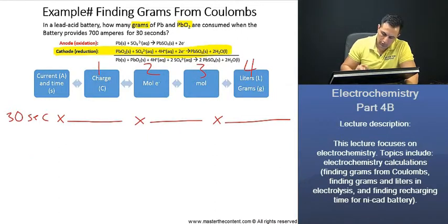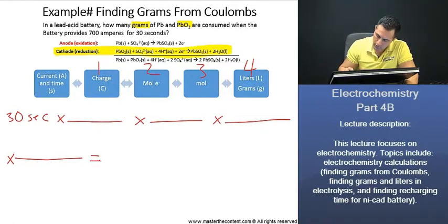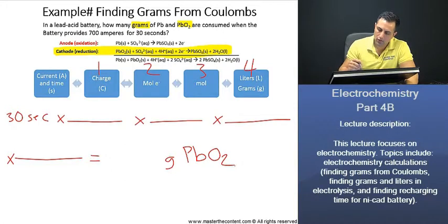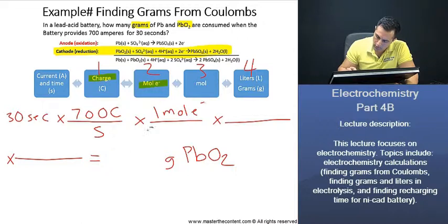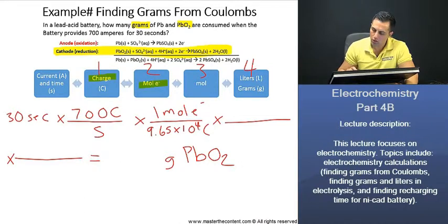Let me do this a little more for us to get into grams. And that's going to give us our grams for our lead oxide. For now, we have 700 amperes. 700 amperes, we just said, is equal to 700 coulombs. We have charge and now we need moles of electrons. One mole of electrons is equivalent to 9.65 times 10 to the 4 coulombs.